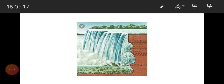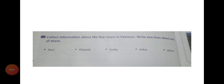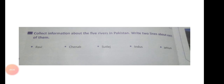Today we have discussed delta, plateau, hills, rivers, lakes, and waterfall. Now for your homework: do the question on page number 10 of your book — collect information about five rivers in Pakistan and write two lines about each. The five rivers are Ravi, Chenab, Sutlej, Indus, and Jhelum. You also have to draw a beautiful waterfall. Waiting for your homework. Thank you, Allah Hafiz.